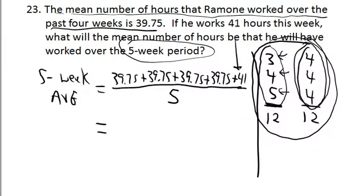Now when you add up all the numbers on top, believe it or not, that comes out to be exactly 200. So you've got 200 divided by five, which is 40. So the answer to the question is, if he works 41 hours that fifth week, what will the mean number of hours be that he will have worked over the five-week period? It'll turn out to be exactly a 40-hour work week on average.